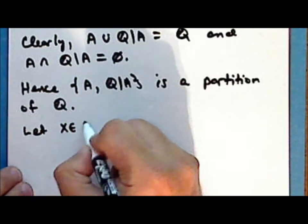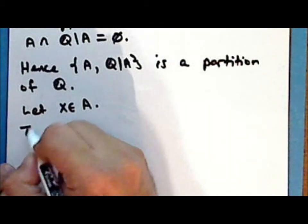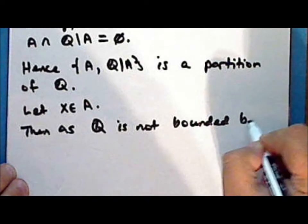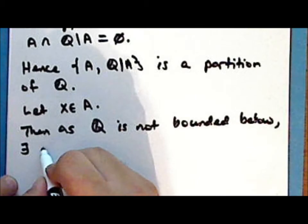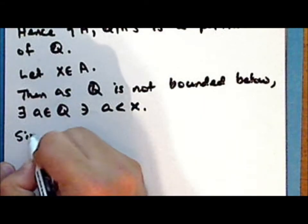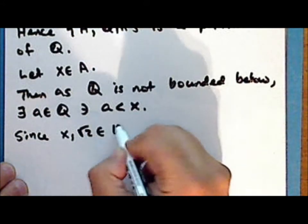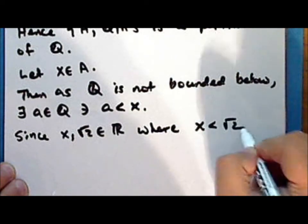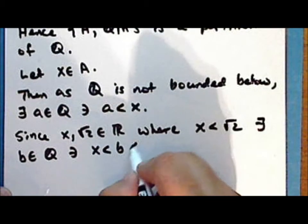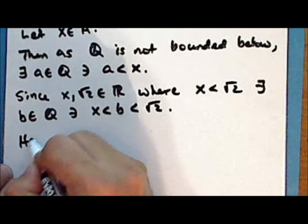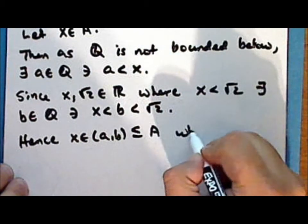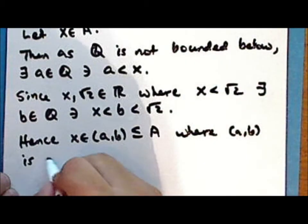Now let X be a point in the set A. Then as the set of rationals is not bounded below, there exists a rational number A such that A is less than X. Now since X and the square root of 2 are real numbers where X is less than the square root of 2, there exists a rational number B such that X is less than B, which is less than the square root of 2. Hence the point X is in the open interval from A to B, which is a subset of set A, where this interval is a basic open set.